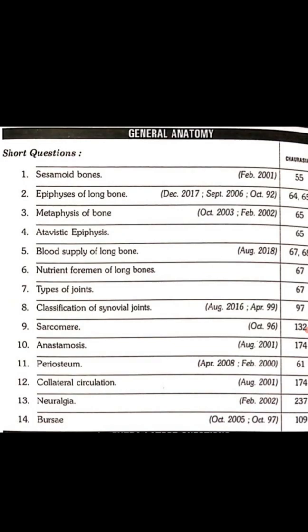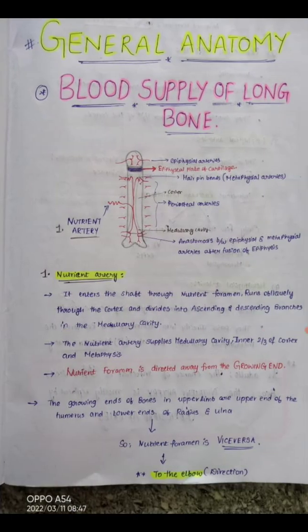In this session we are going to discuss the blood supply of the long bone. I have drawn a diagram showing all the arteries that supply the long bone. Mainly four arteries are present: the nutrient artery, periosteal arteries, epiphyseal arteries, and metaphyseal artery. Let us discuss each artery in detail.